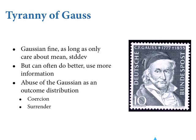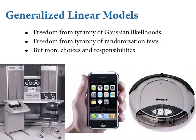So we'll try to get past coercion and surrender. The technological advance of statistical methods is faster than the tenure cycle — that's basically how it works. Generalized linear models are the beginning of a whole range of different methods — they're our gateway drug to get freedom from the tyranny of Gaussian likelihoods and freedom from the tyranny of randomization tests as a fallback strategy. But with this comes a lot more choices and responsibilities, so we need principles. All that maximum entropy material from last week is to help us have a principle by which to select likelihoods.